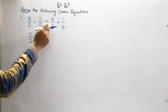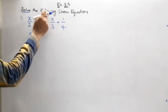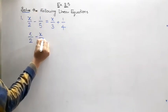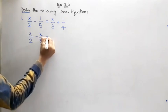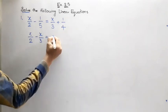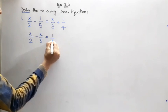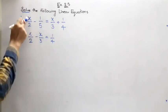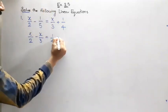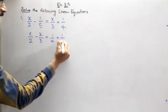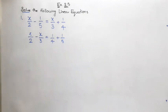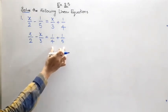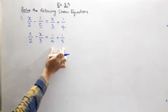So x by 2 plus x by 3, if we transpose to the other side, it will become minus x by 3, which is equal to already on the RHS we have 1 by 4. Here the constant term is minus 1 by 5. So if we transpose it to the other side, it will become plus 1 by 5.